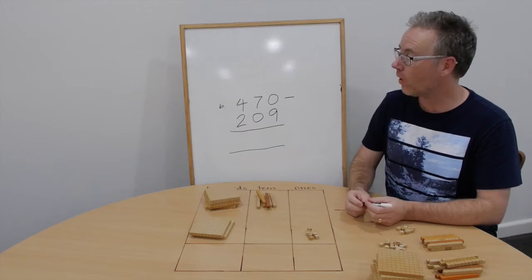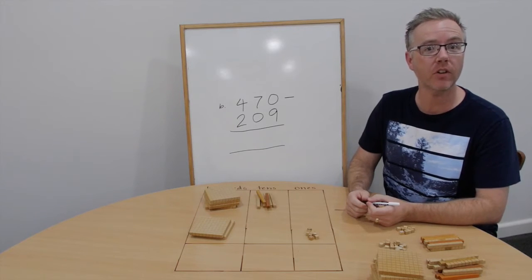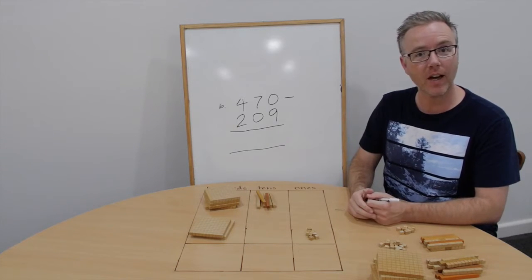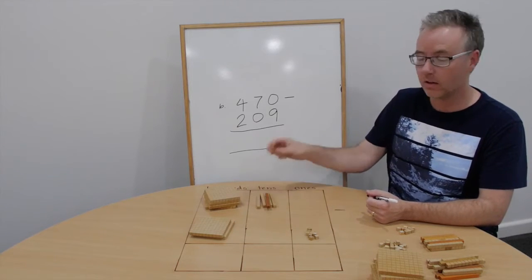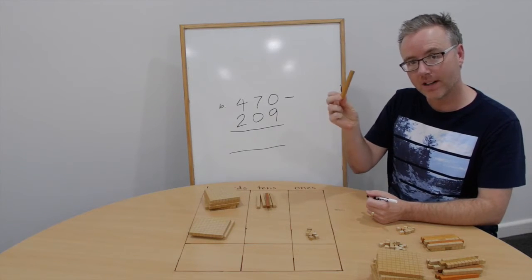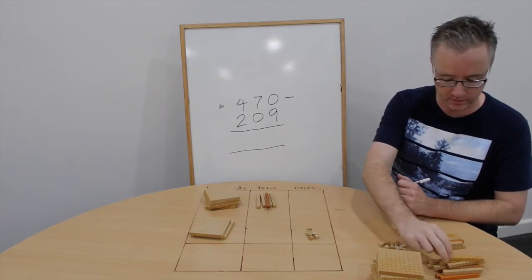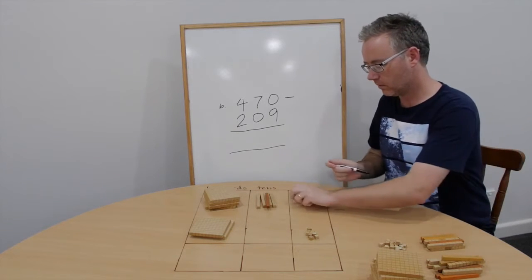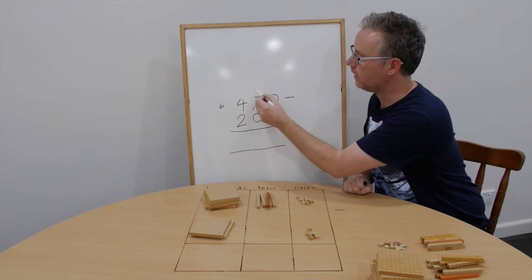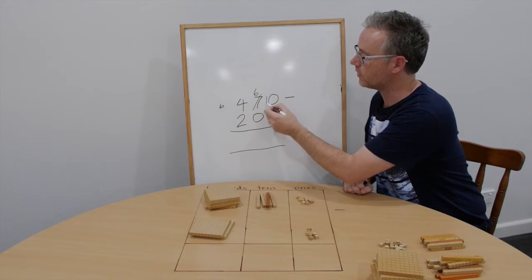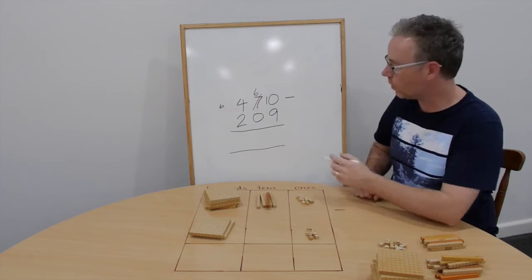Question B. 470 take away 209. So the first thing we ask is 0 take away 9. We can't do. So let's trade 10, 1 ten for ten ones. So we now have 60, not 70. And bring that 10 across to here. 10 take away 9 is 1.